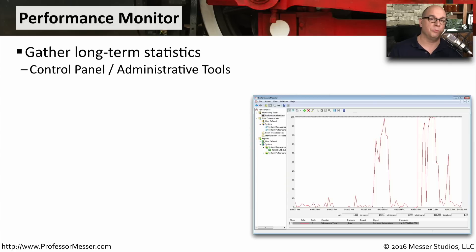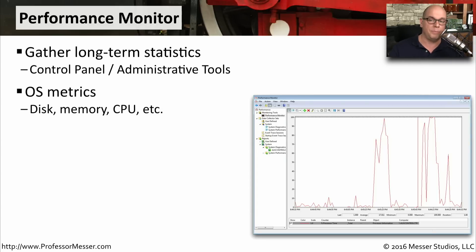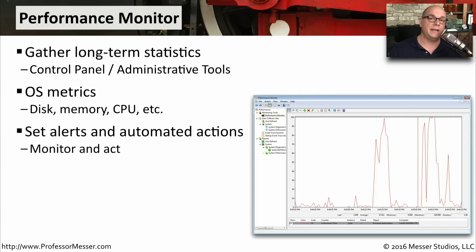It's sometimes interesting to see a real-time view of statistics — you may need to know the current CPU utilization or how much disk utilization is being used. But if you want to gather that information over a very long period of time, you use a utility called the Performance Monitor. You can start the Performance Monitor from the Control Panel under Administrative Tools. This will show you metrics such as operating system disk usage, memory utilization, and CPU utilization. You can even set alerts so that if these values exceed a certain amount, you can be informed. You can also set automated actions so that things occur automatically if disk utilization reaches a certain point.